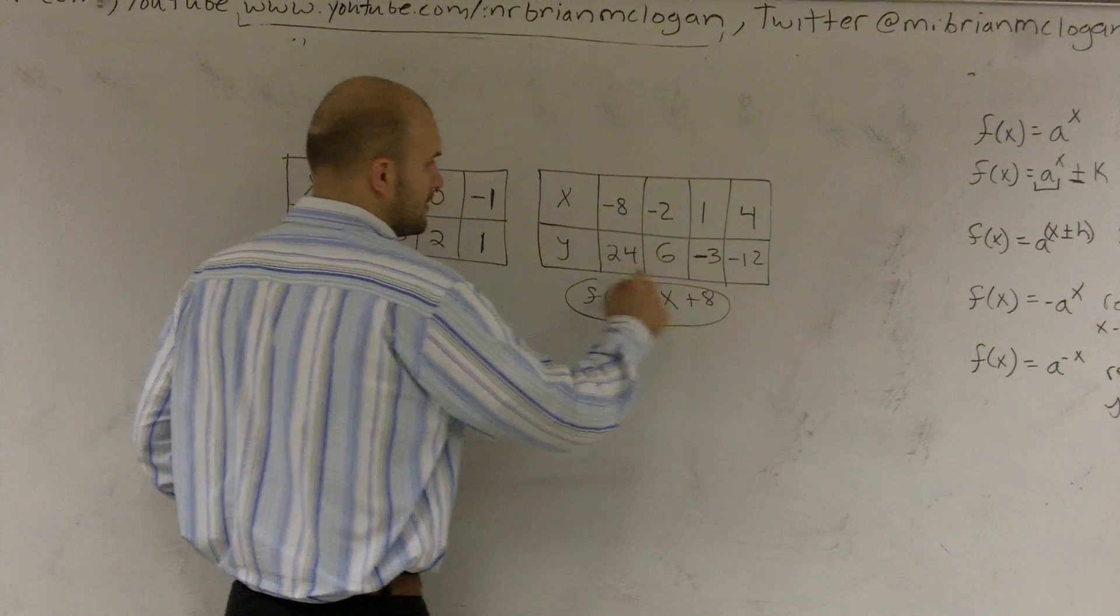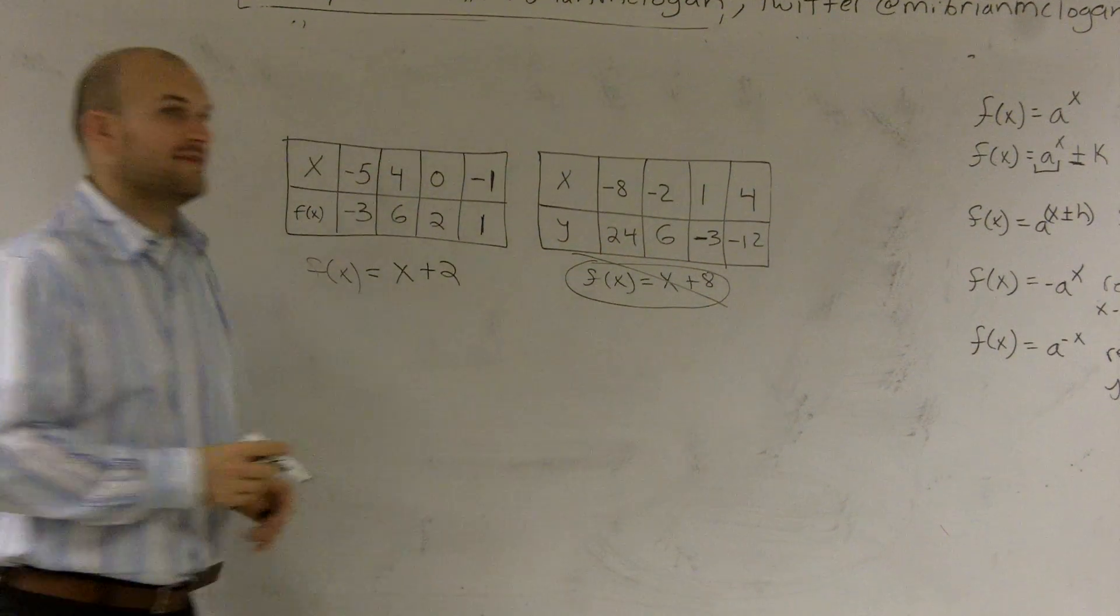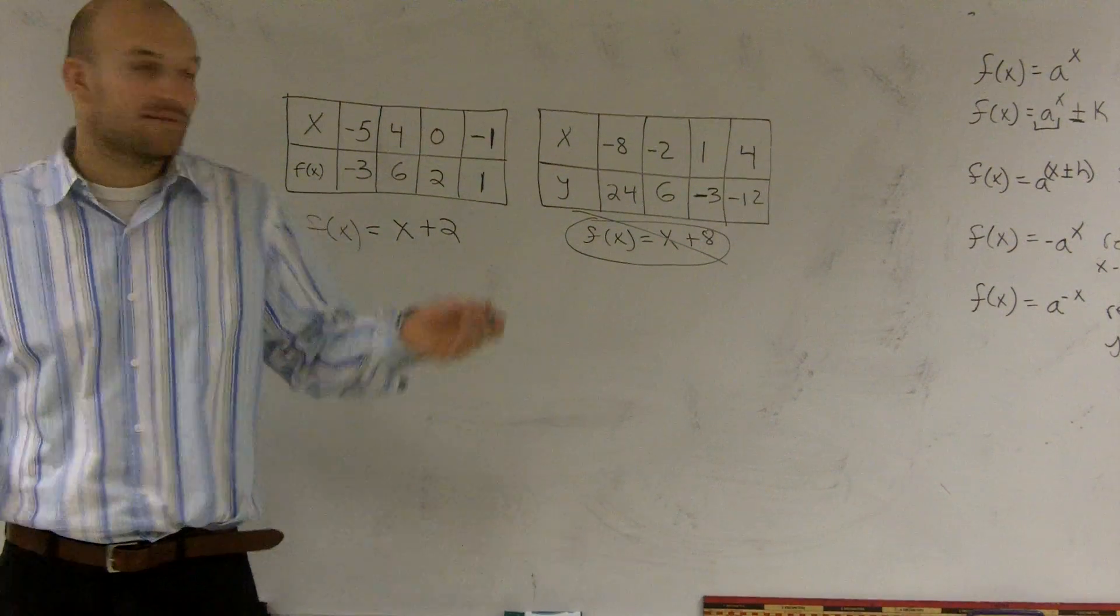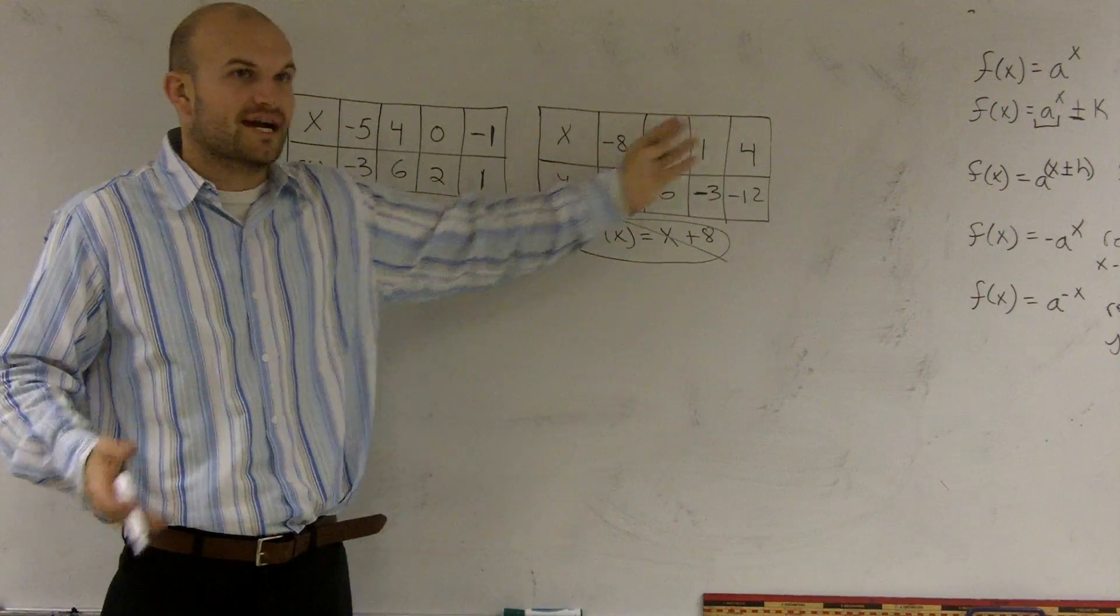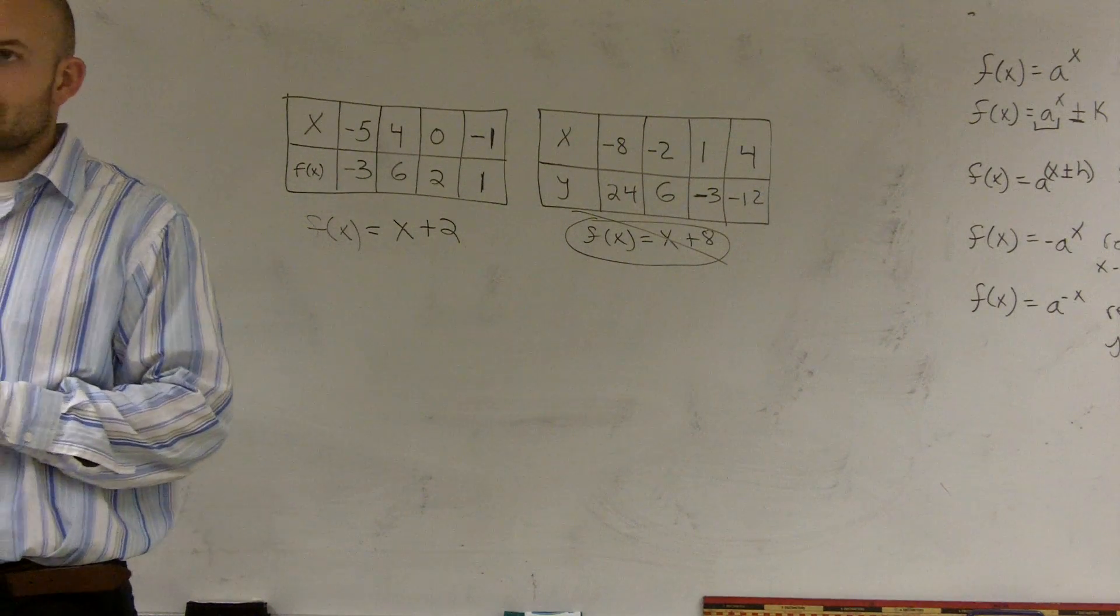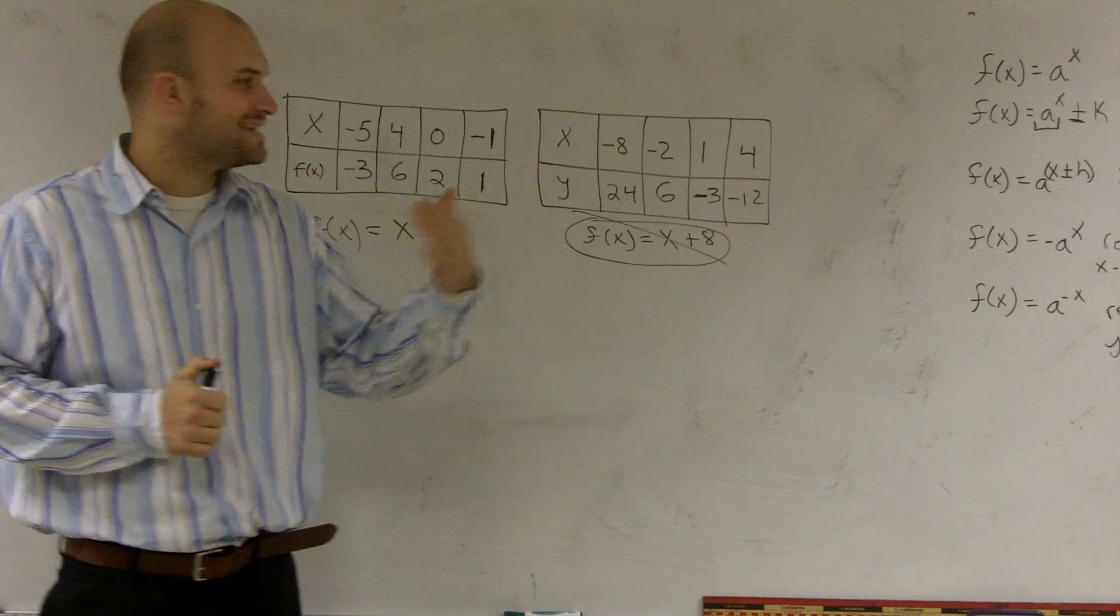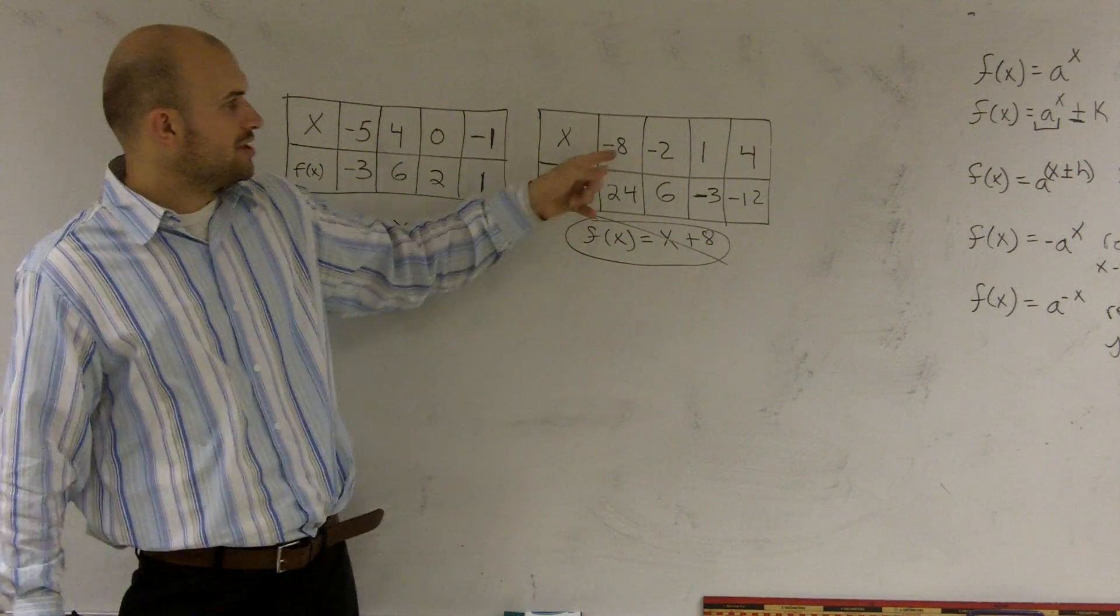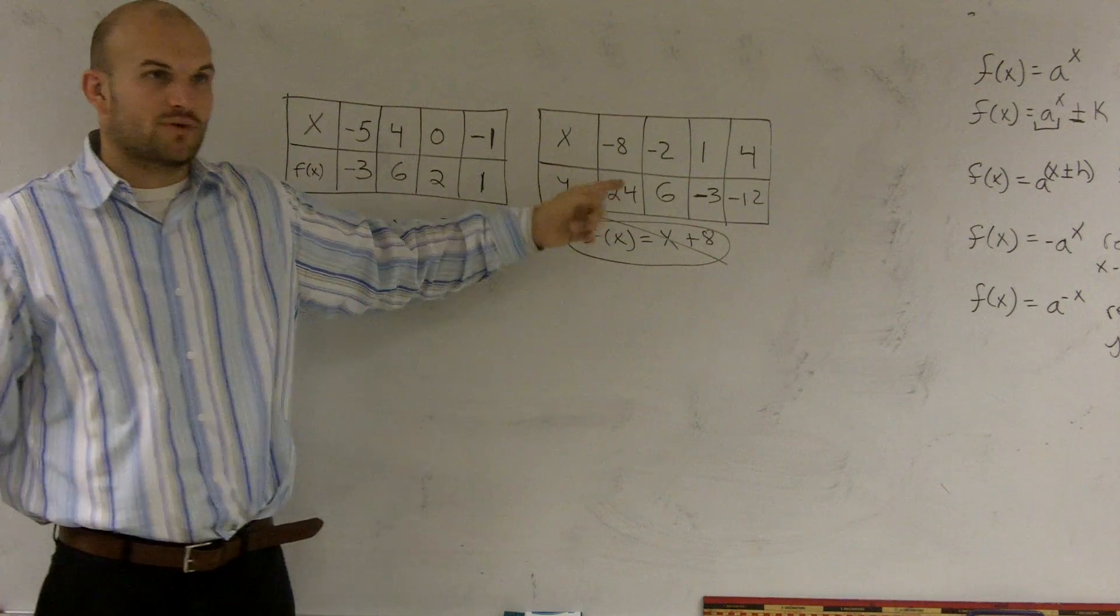So therefore, this rule does not work. And therefore, if one adding or subtracting doesn't work, none of them work, right? Because it has to be the same for all your x values. So the next thing I'm going to look to is multiplication and division. So I can say, all right, let's look at multiplying. What do I have to multiply a negative eight by to give me a 24?